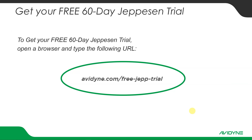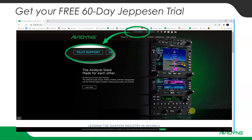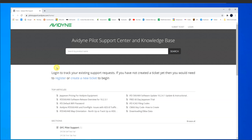To get your free Jepp trial after you've ordered your IFD, go to avidyne.com/free-Jepp-trial. Another way to get there is just go to avidyne.com, and you'll see at the top of the page a pilot support link. Click on that link, and it will take you to the pilot support center and knowledge base.